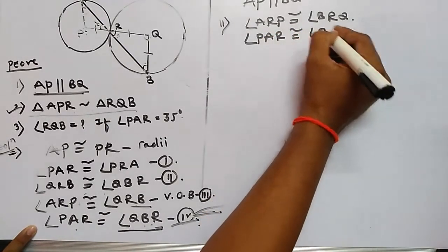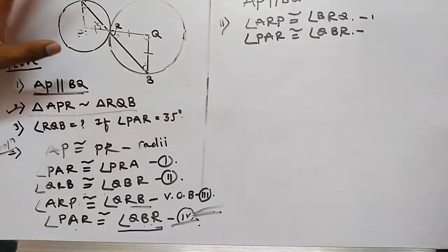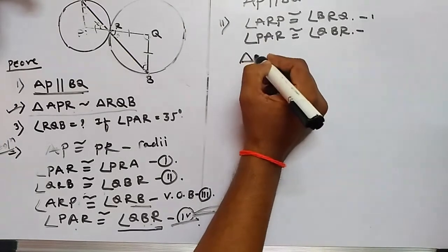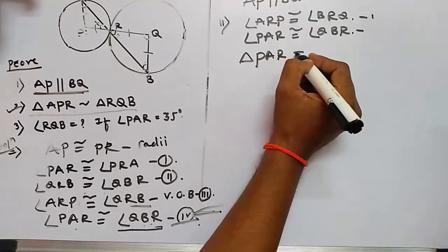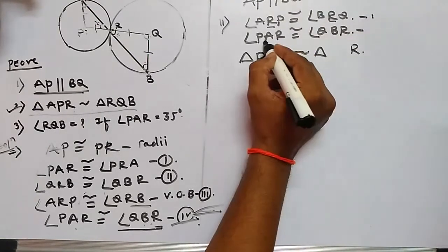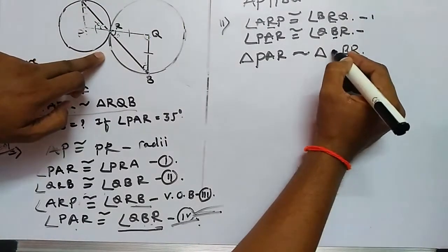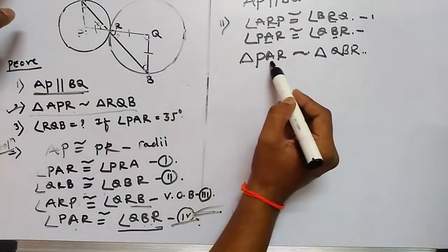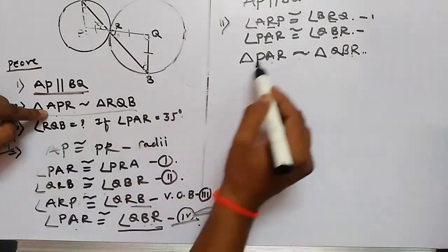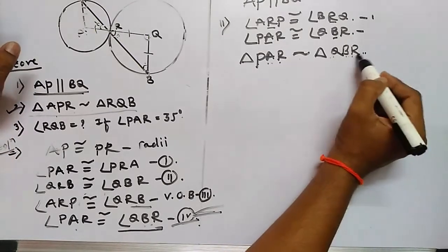Angle PAR is congruent to angle QBR, and angle ARP is congruent to angle BRQ. In these two triangles, we have shown two corresponding angles as congruent. From this, by the AA similarity criterion, triangle PAR is similar to triangle QBR, which we can also write as triangle APR is similar to triangle BQR. This completes the second part.